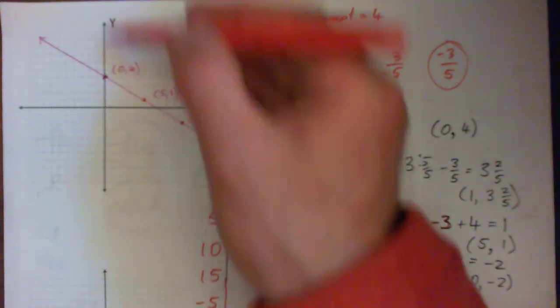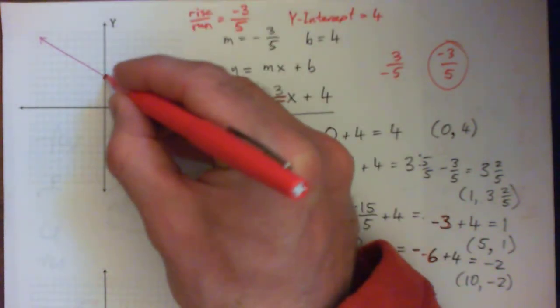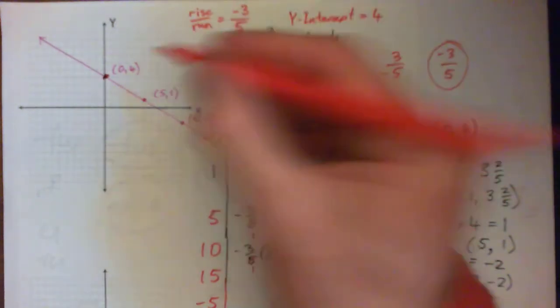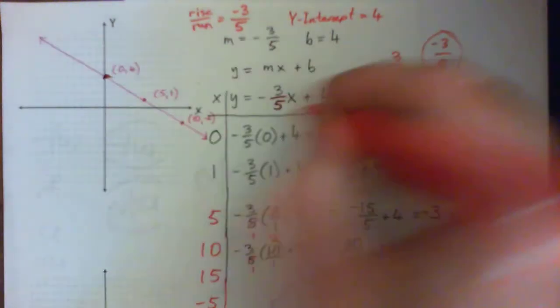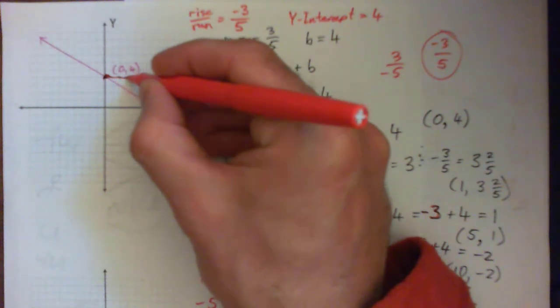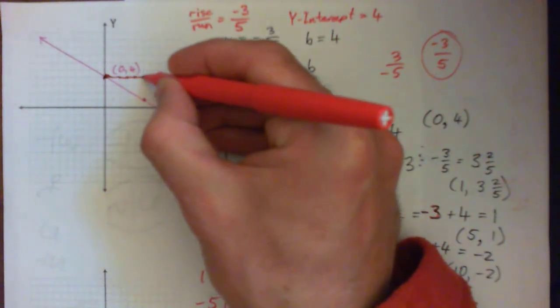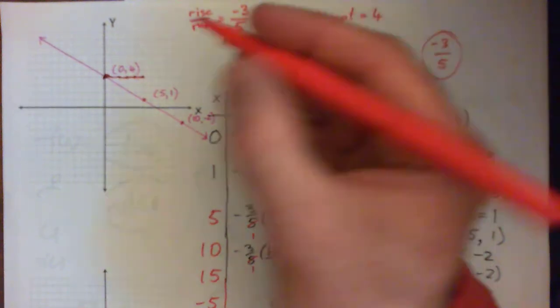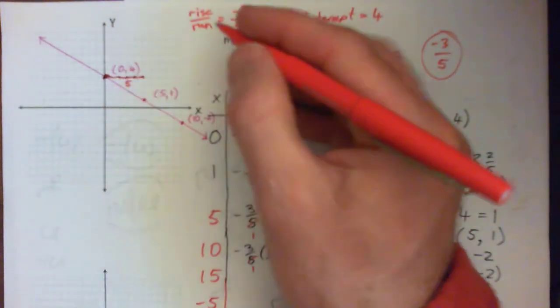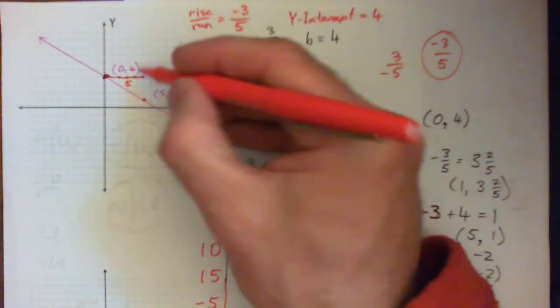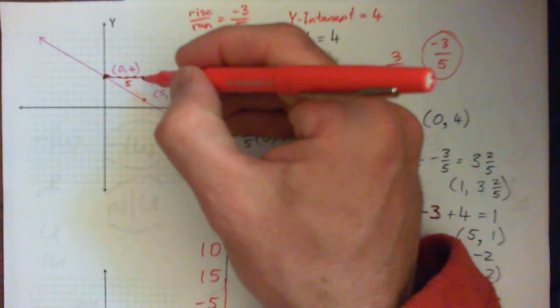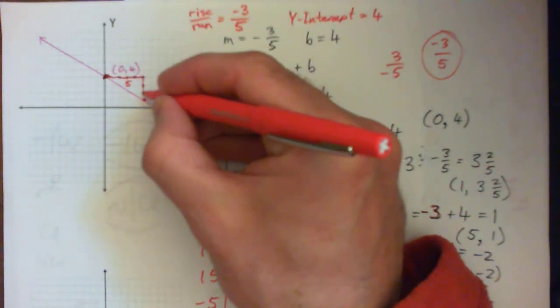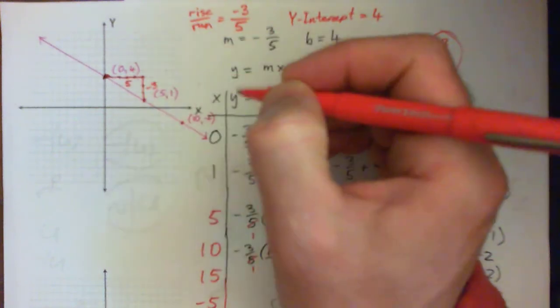Then we're going to run 5 and rise -3. Let's start by running 5. We run across the road: run 1, 2, 3, 4, 5, and then stop. We run 5, and then we're going to rise -3. Rise means usually go up, but if your rise is negative, it means go down: down 1, 2, 3, down 3.